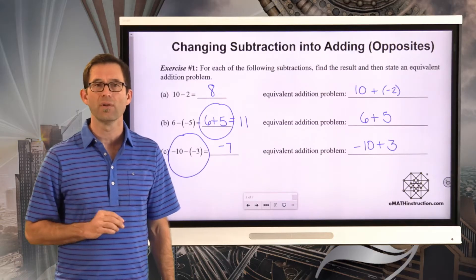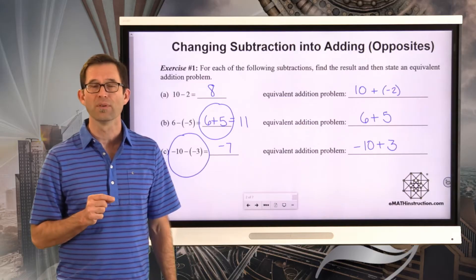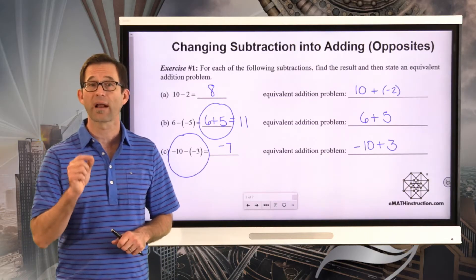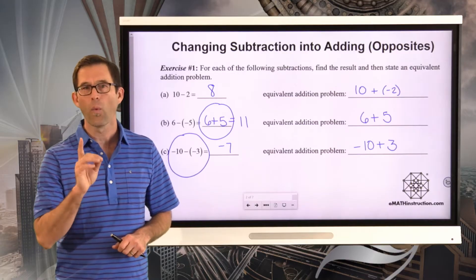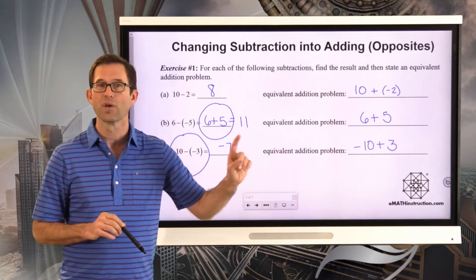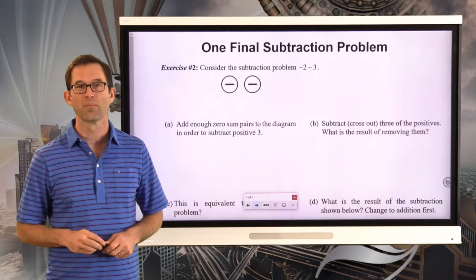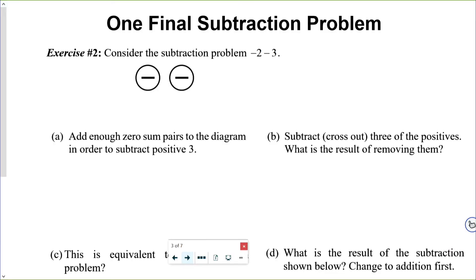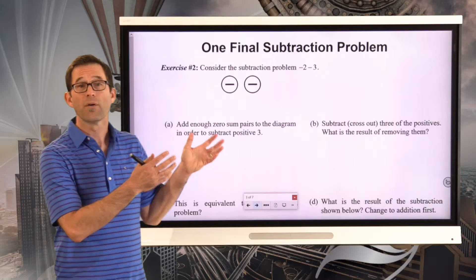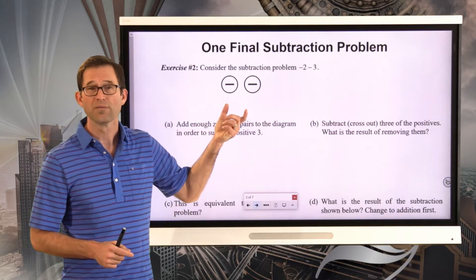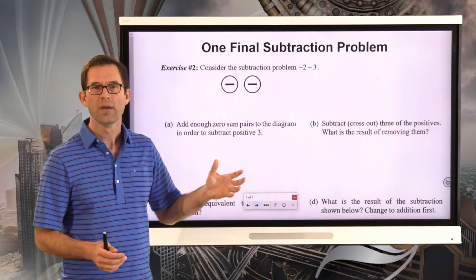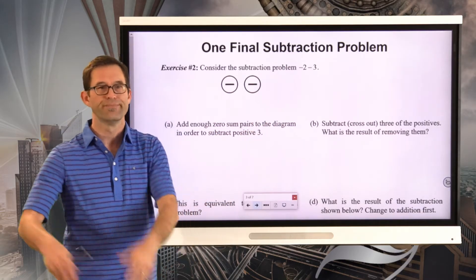Now there's actually one scenario we haven't looked at yet — specifically what happens when we have a negative number and we subtract a positive from it. Exercise number 2: consider the subtraction problem negative 2 minus 3. Letter A asks us to add enough zero-sum pairs to the diagram in order to subtract positive 3. What we have is two negatives and we want to subtract three positives, but there's no positive sitting here at all.